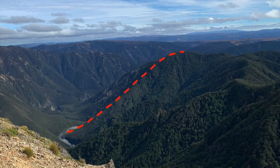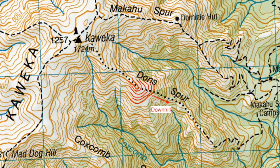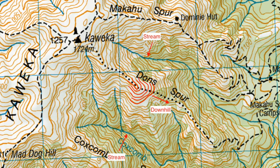A spur is a lateral ridge which descends from a hill, mountain, or ridge to an area of lower land such as a valley. A spur can be identified on a map by the contours forming a V or U shape pointing in the downhill direction, usually between two streams.